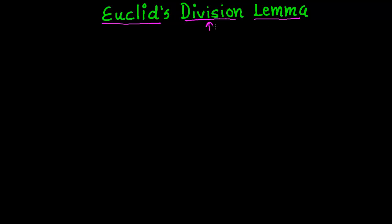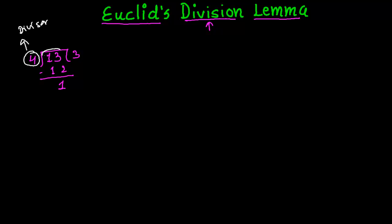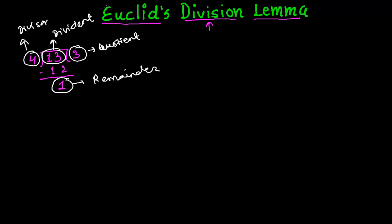To understand Euclid's division lemma, we need a basic concept of the long division method. Suppose I have the number 13 and I'm dividing it by 4. I get 3 as the quotient — since 4 times 3 is 12 — and when I subtract 12 from 13, I get remainder 1. So: 4 is the divisor, 13 is the dividend, 3 is the quotient, and 1 is the remainder.